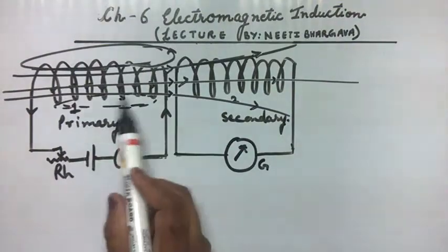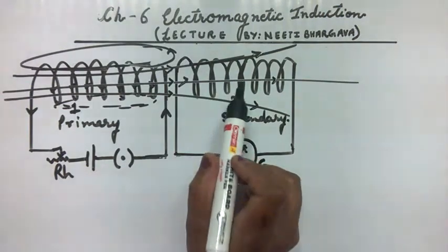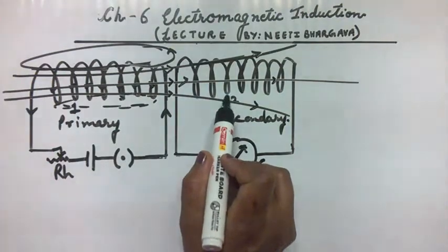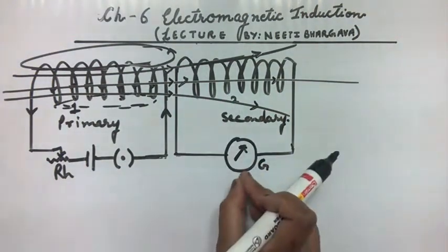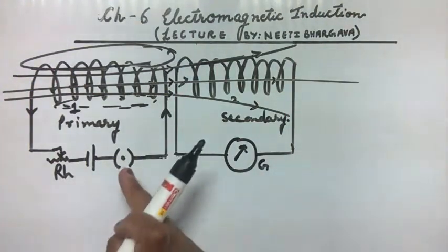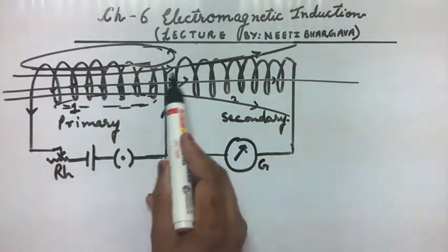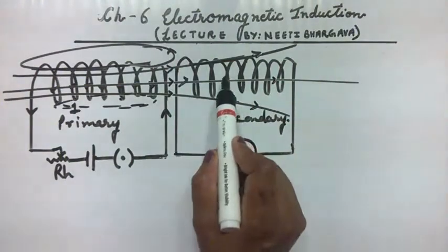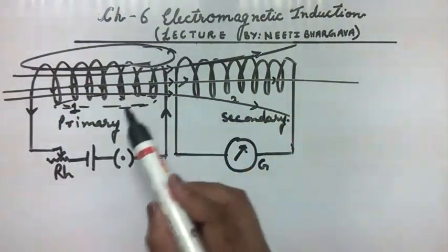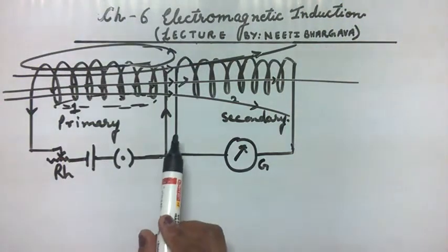There is a change in magnetic flux in coil 1 and also in coil 2. Because of this change in magnetic flux in coil 2, an EMF is induced in coil 2 and the galvanometer shows deflection. When we release the key, there is a decrease in current, the magnetic field lines decrease, and again there is a change in magnetic flux — so EMF is induced again. This process of inducing EMF in coil 2 because of coil 1 is known as mutual induction.